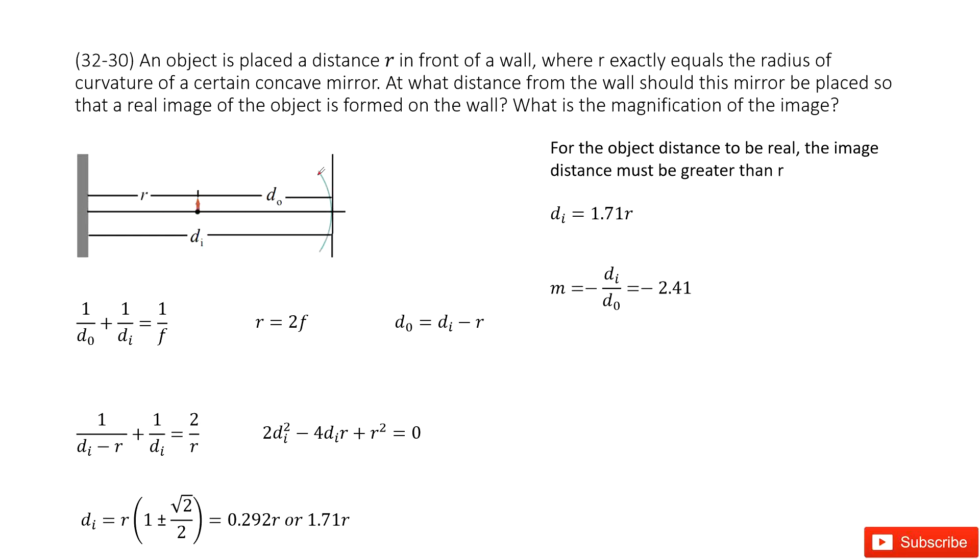So after we put the mirror right there, the object distance is di minus r, as the picture shows us. Now, how can we connect the d0 with dr?